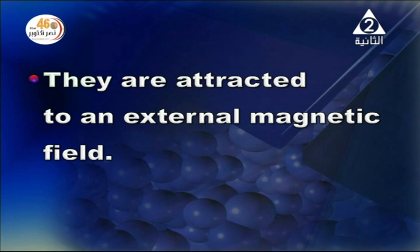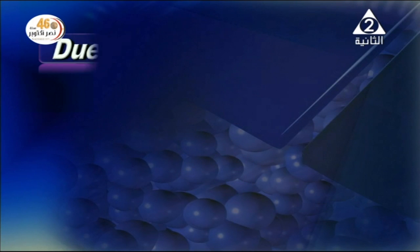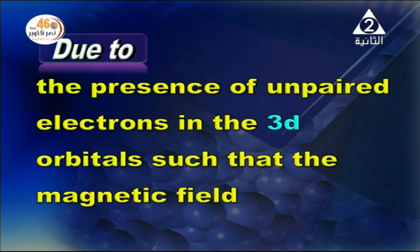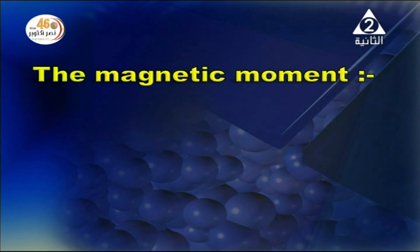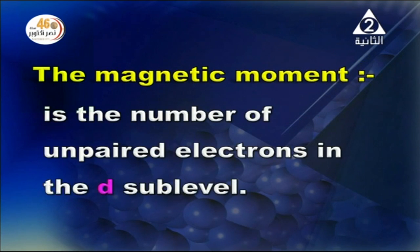Regarding magnetic properties: transition elements are attracted to an external magnetic field. This is due to the presence of unpaired electrons in the 3d orbitals, such that the magnetic field resulting from their spin motion is attracted to the external magnetic field.